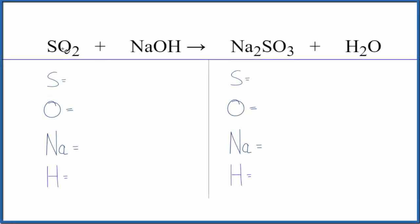In this video, we'll balance the equation for SO2 plus NaOH. This is sulfur dioxide and sodium hydroxide. Let's count the atoms up and balance the equation.